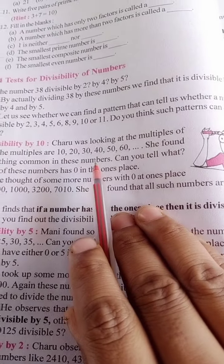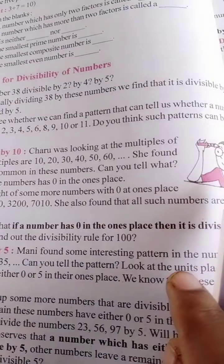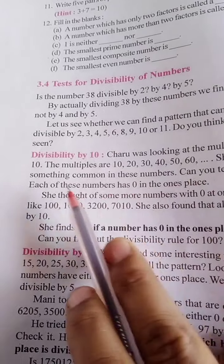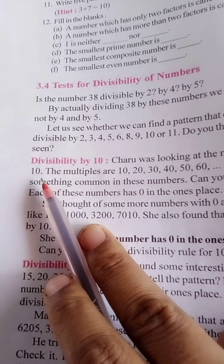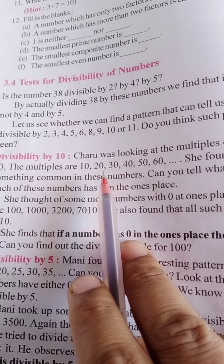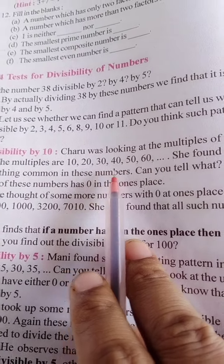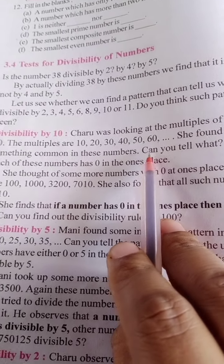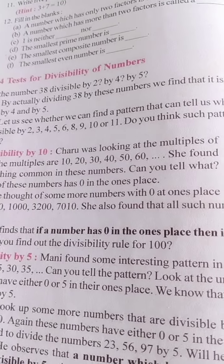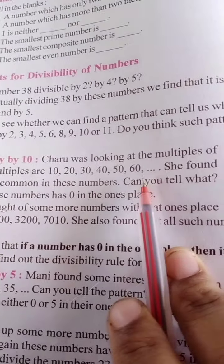Charu was looking at the multiples of 10. The multiples of 10 are what comes in the table of 10: 10, 20, 30, and so on. These are multiples, as I have taught you in the previous class when we did exercise 3.1. She listed them this way until 60.